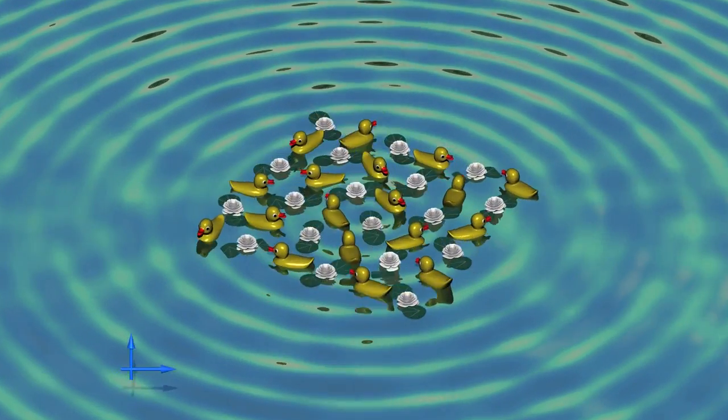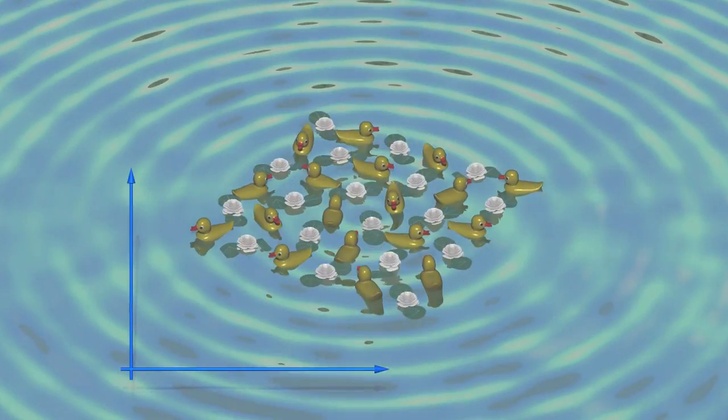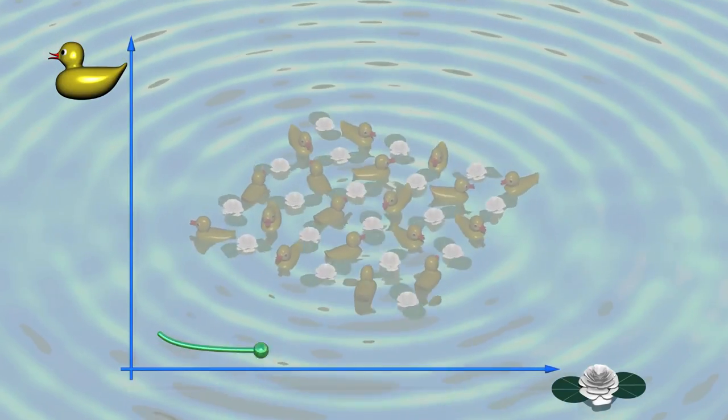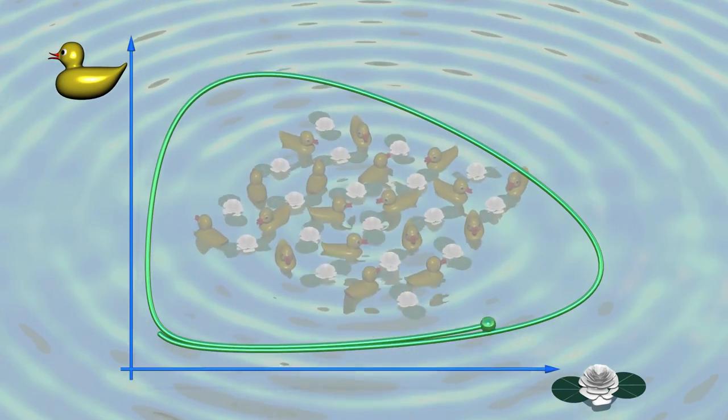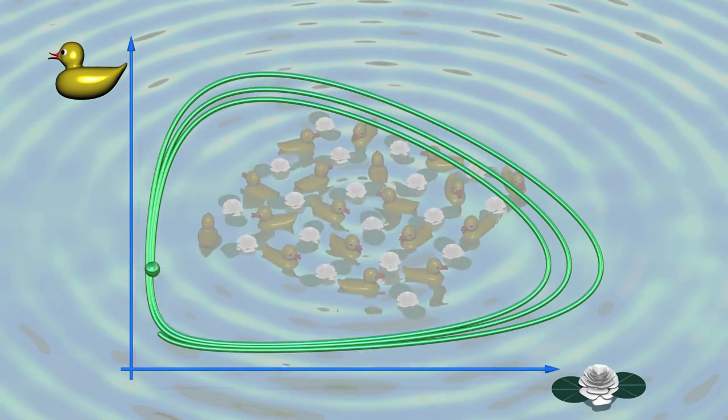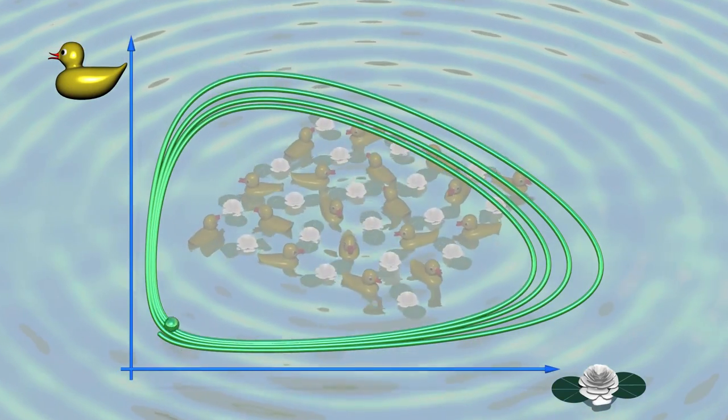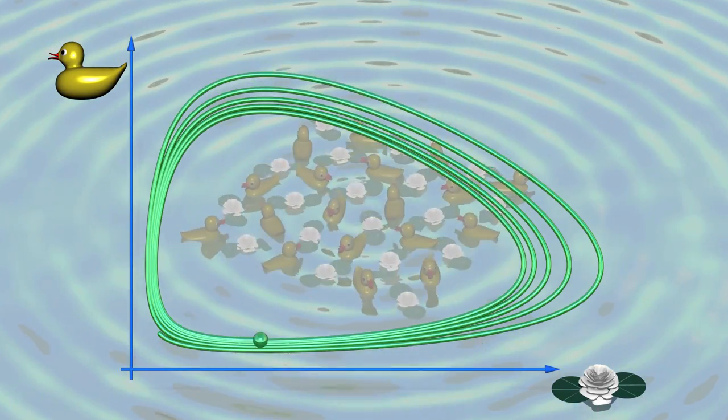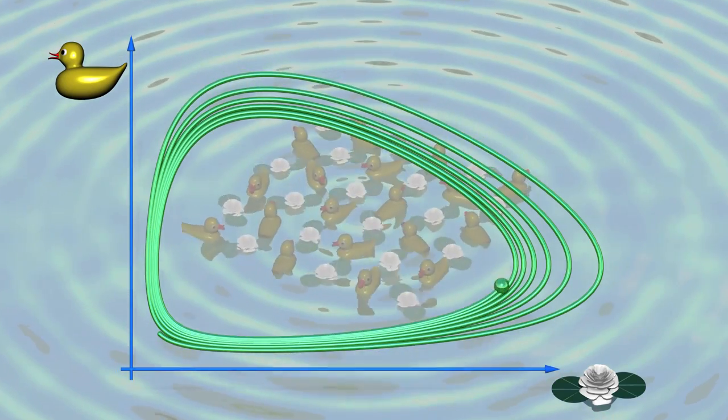We can record the situation at any given moment in time using a point on a plane. The first coordinate represents the number of water lilies and the second represents the number of ducks. In fact, we get a vector field in the plane. Over time, the ducks and lilies follow a trajectory of the vector field and reach a limit cycle. The populations of ducks and water lilies eventually oscillate periodically.